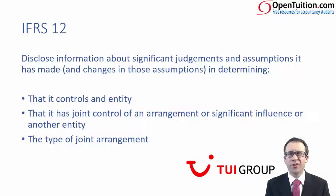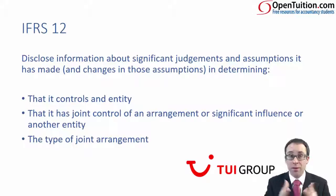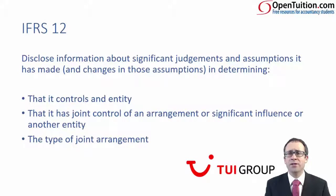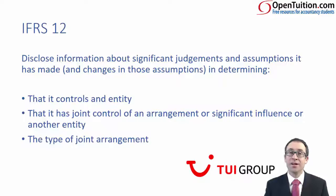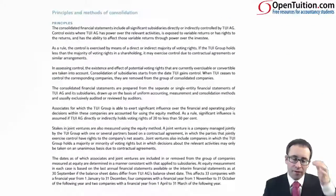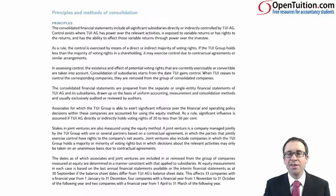Let's go through and look at some real-world disclosures to keep things a bit more interesting. We'll look at the TUI Group, which is a European travel-based company. If you're in the UK, you may have been on holiday with Thomson Holidays or flown with Thomson Airlines — they are all part of the TUI Group. So they have lots of investments in hotels and airlines, and they need to explain to the users of the accounts the judgments made in determining control, joint control, and influence, and talk about the type of joint arrangements. The first bit pulled out is looking at the methods of consolidation, and the first element we're going to consider is control.